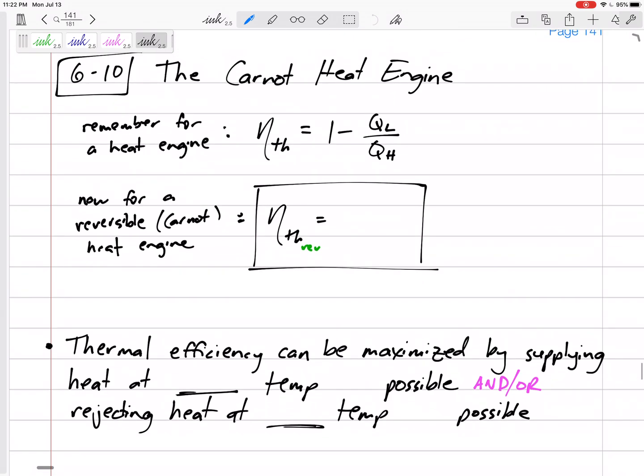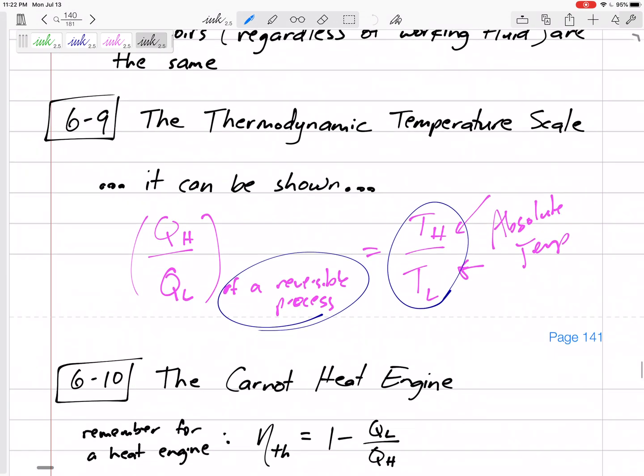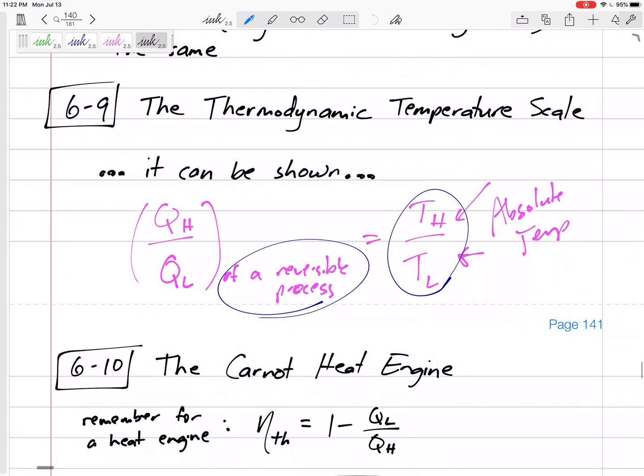A Carnot heat engine uses these processes. In the last video I briefly mentioned, but should really go into detail more, that for a reversible process the QH over QL is the same as the TH over TL. The TH and TL are the absolute temperatures of the hot source and the low temperature sink.